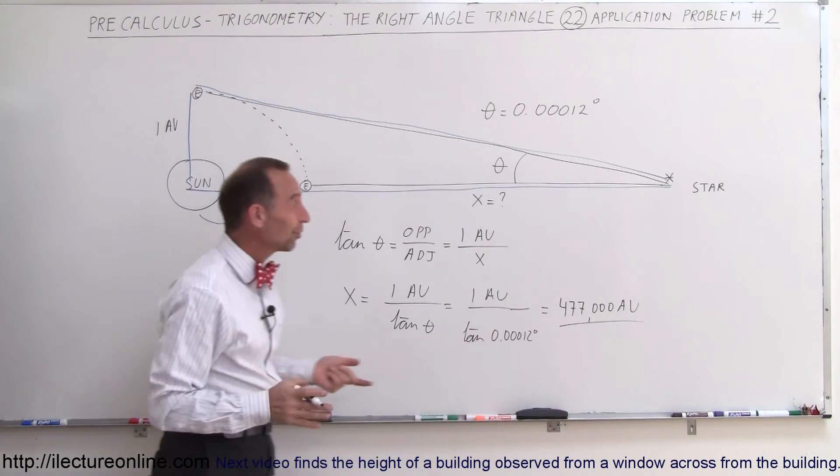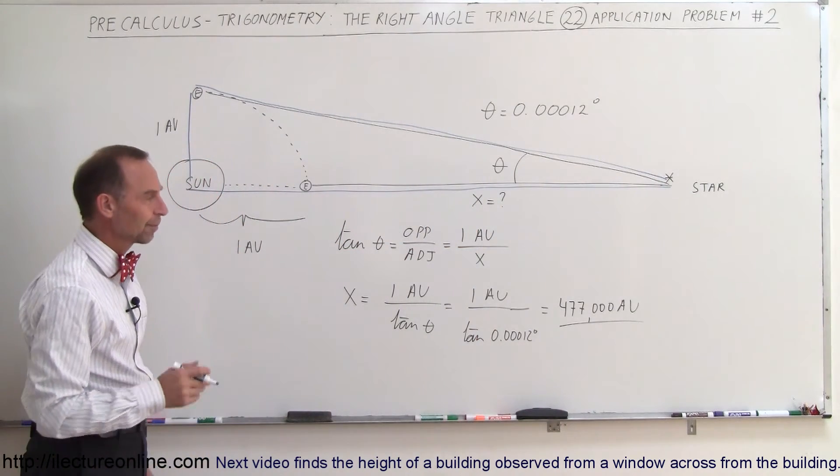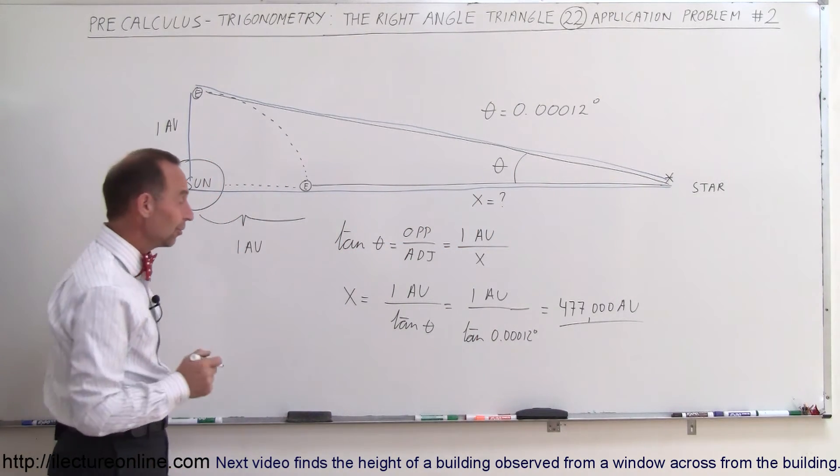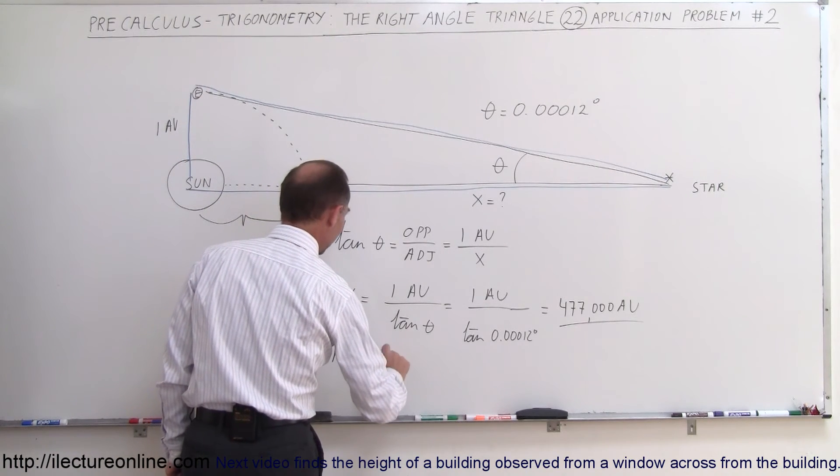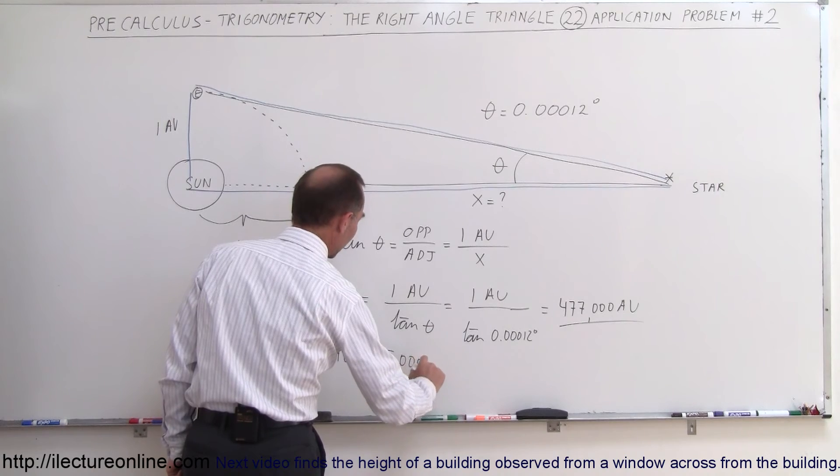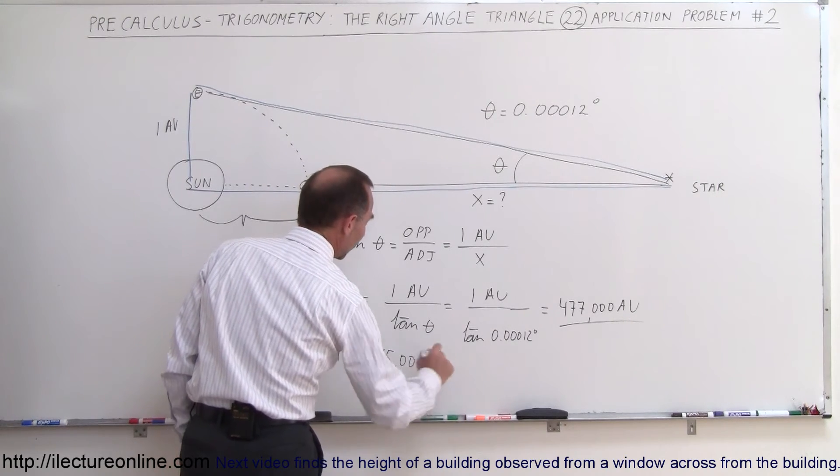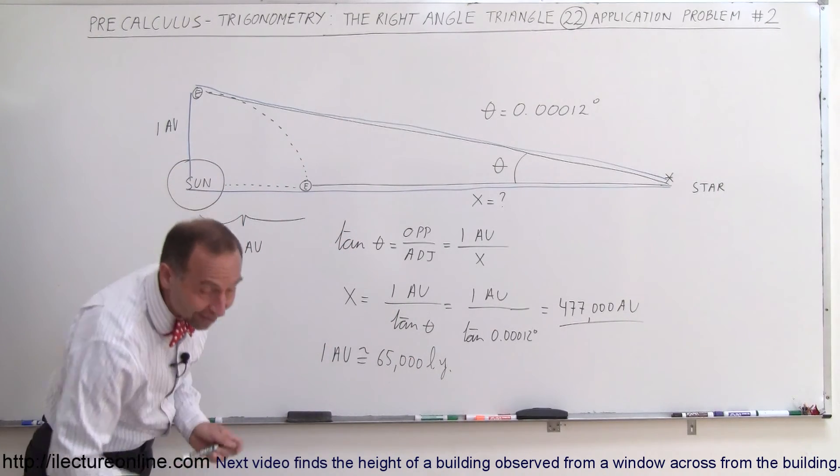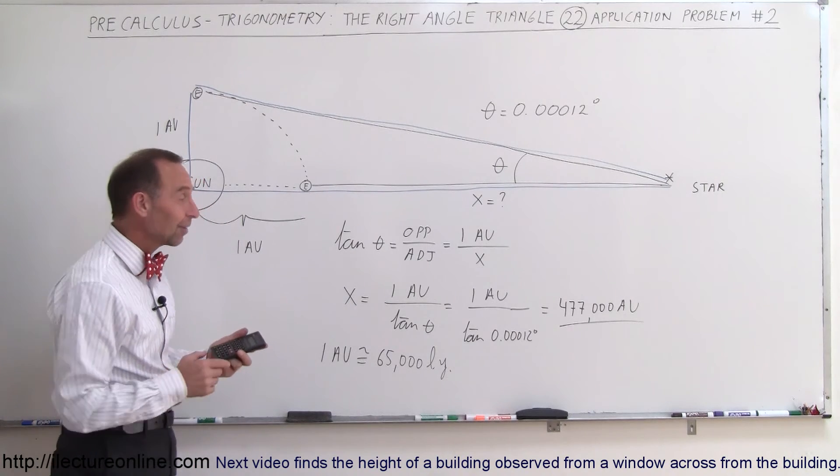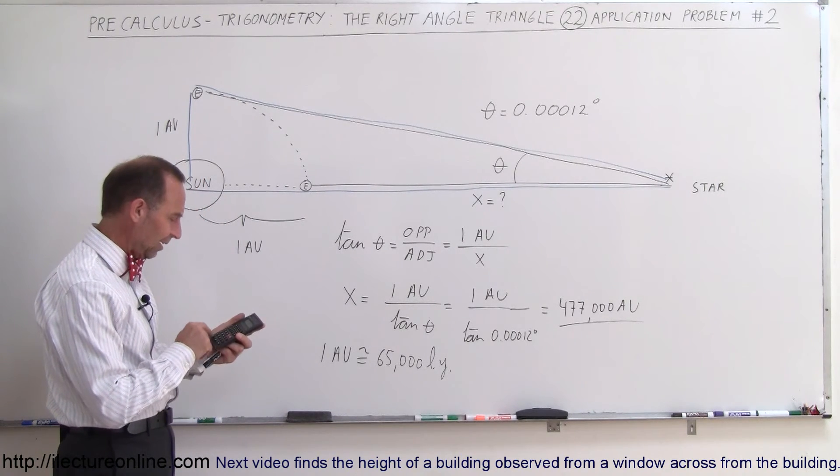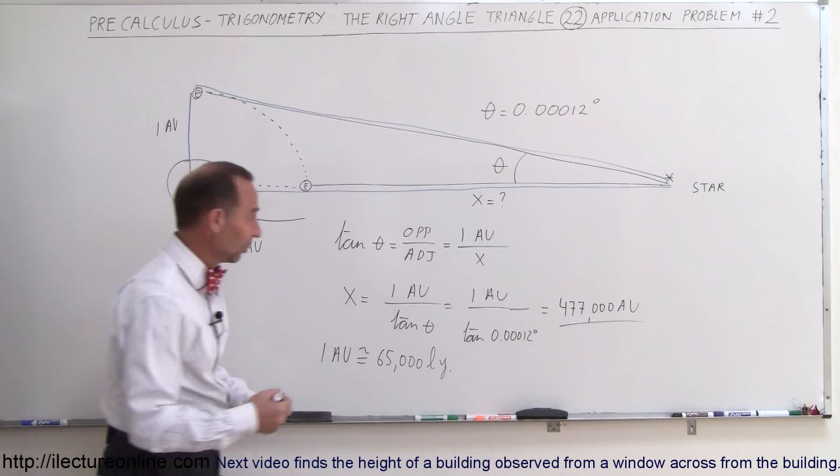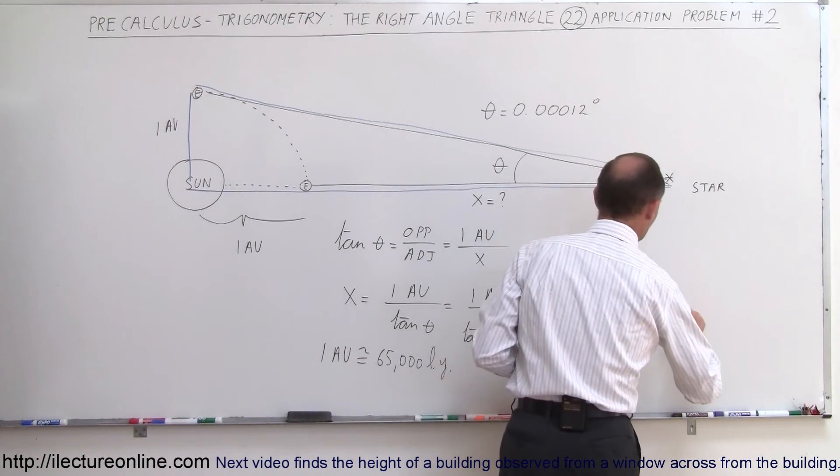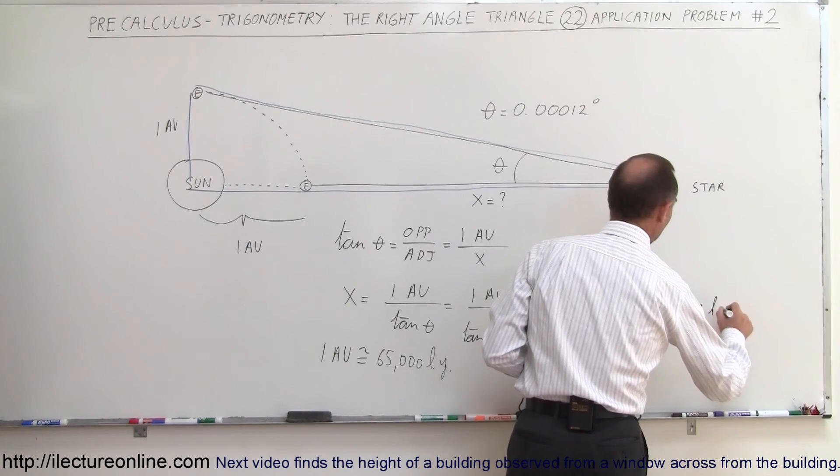So here you can see that plus or minus 1 really doesn't make any difference. How far is that? Well, it turns out that one astronomical unit is approximately equal to 65,000 light-years. So if we divide that number by 65,000, we can get the answer in light-years. So divide by 65,000, we get 7.3 light-years. So that would be equal to 7.3 light-years.